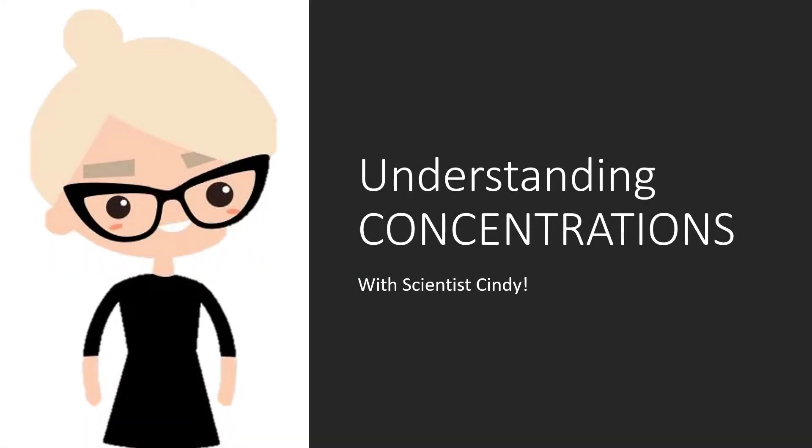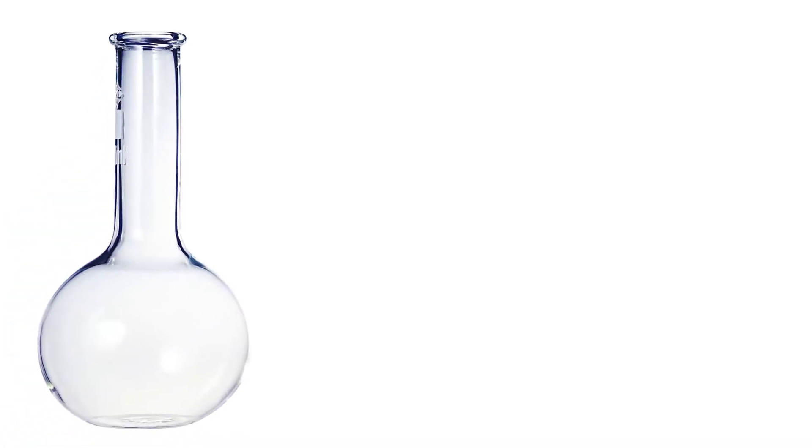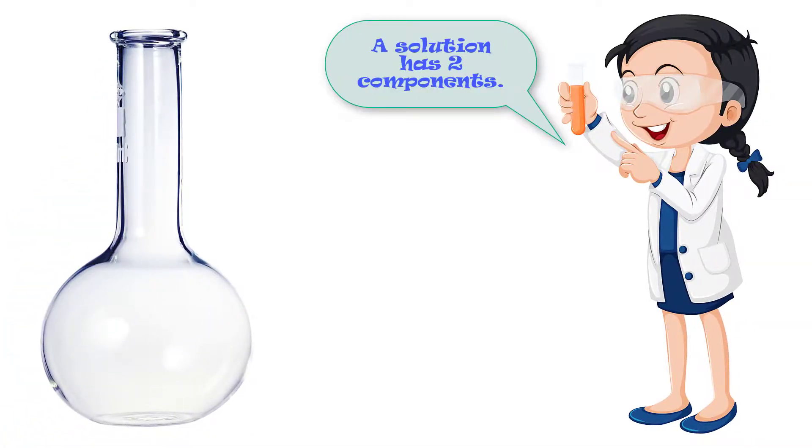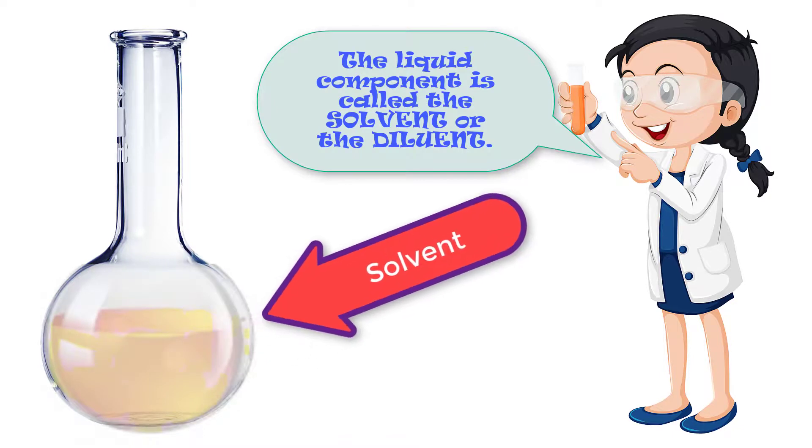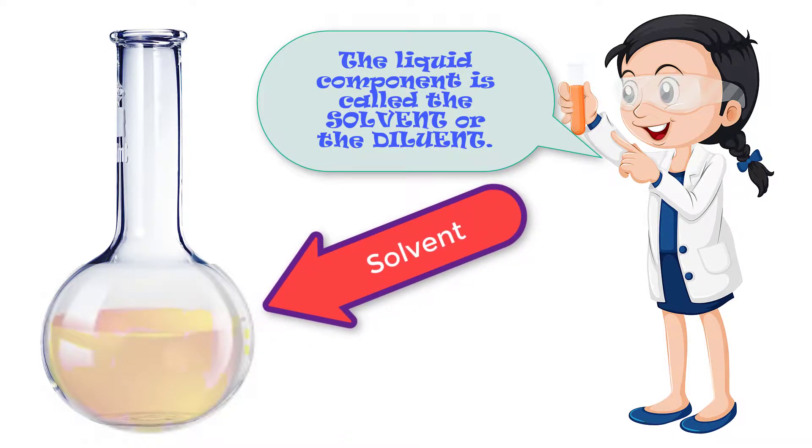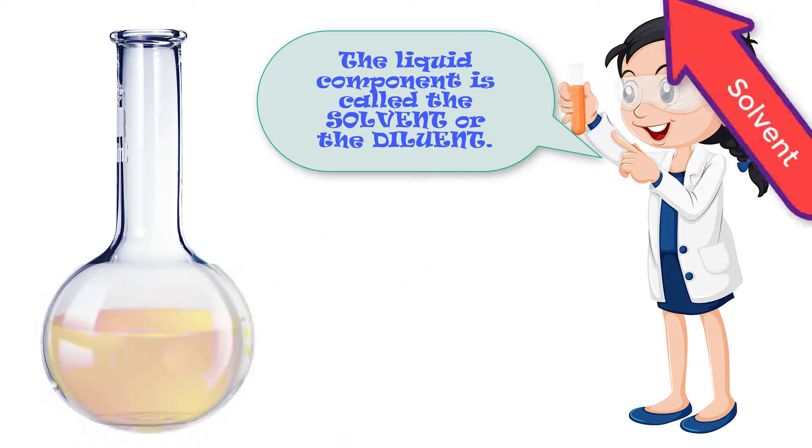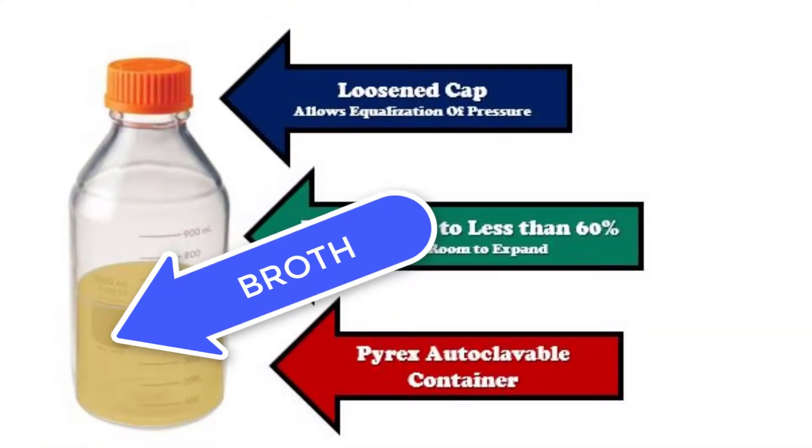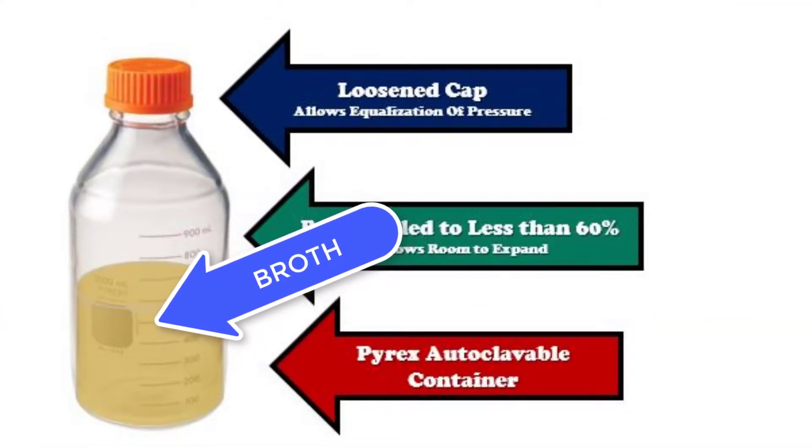Understanding Concentrations with Scientist Cindy. A solution has two components. The liquid component of the solution is called the solvent or diluent. In our examples in microbiology, the solvent is usually nutrient-rich broth.